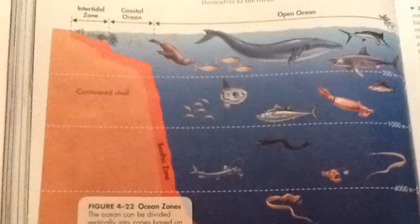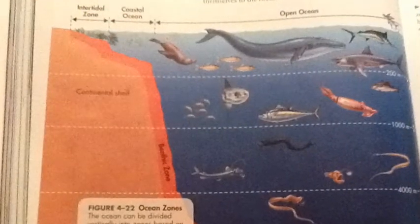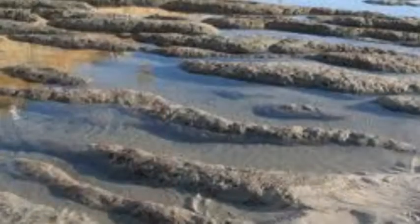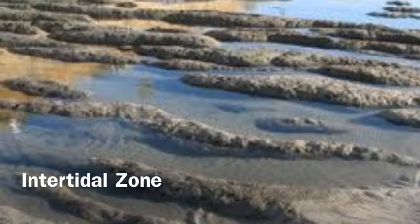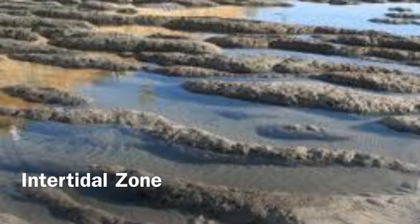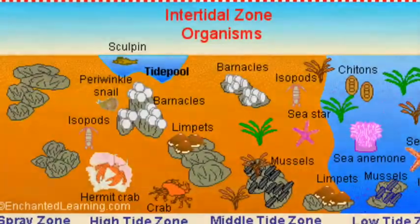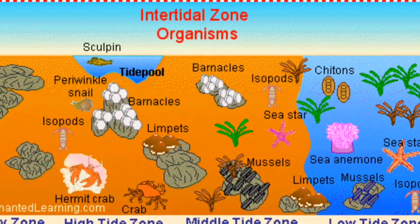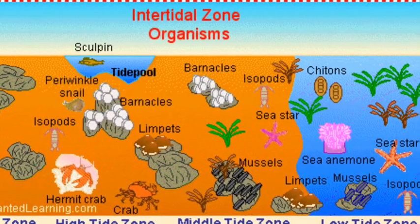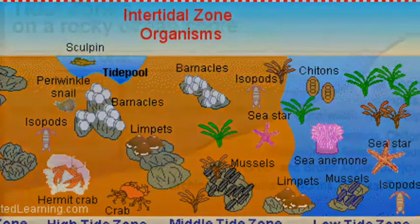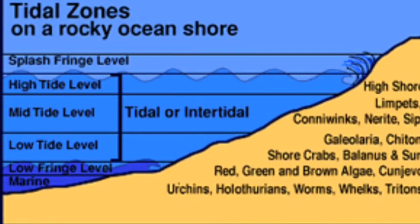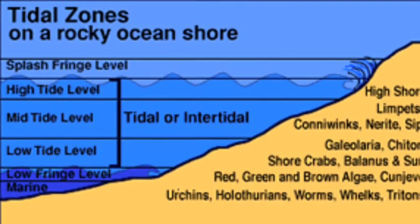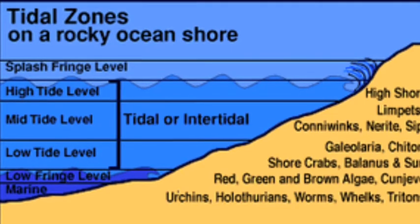These zones are divided based on the depth and distance from the shore. Organisms in the intertidal zone are submerged in seawater at high tide and exposed to air and sunlight at low tide. These organisms are subjected to regular and extreme changes in temperature.